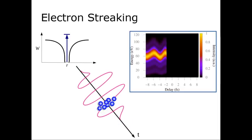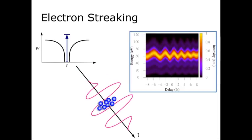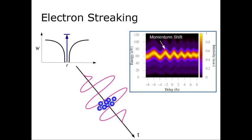By recording the photoelectron energy spectrum as a function of the delay between the two pulses, it is possible to retrieve complete temporal information about both the IR streaking pulse as well as the attosecond EUV pulse.